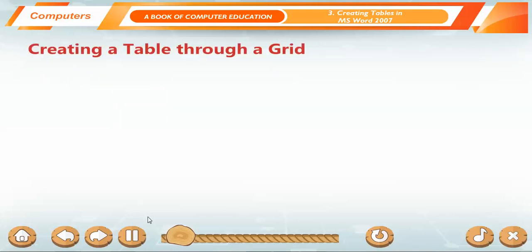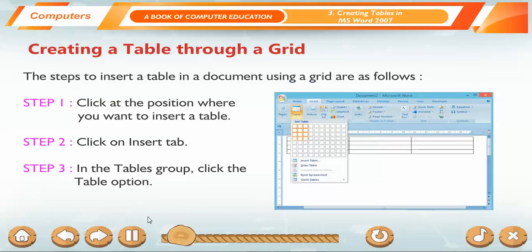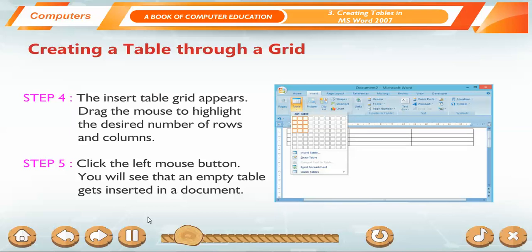Creating a table through a grid. The steps to insert a table in a document using a grid are as follows. Step 1: Click at the position where you want to insert a table. Step 2: Click on Insert Tab. Step 3: In the Tables group, click the Table option. Step 4: The Insert Table grid appears. Drag the mouse to highlight the desired number of rows and columns. Step 5: Click the left mouse button. You will see that an empty table gets inserted in a document.